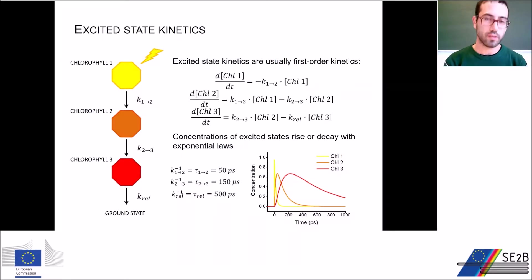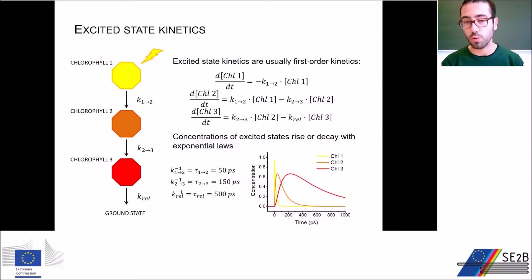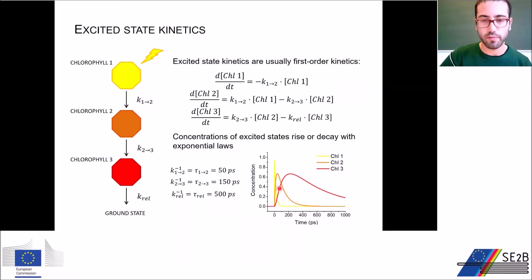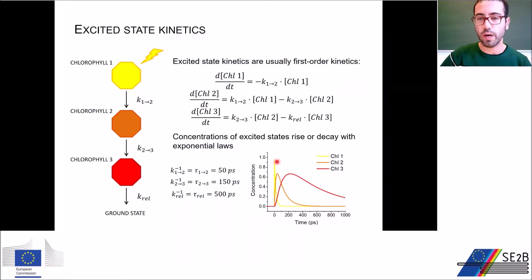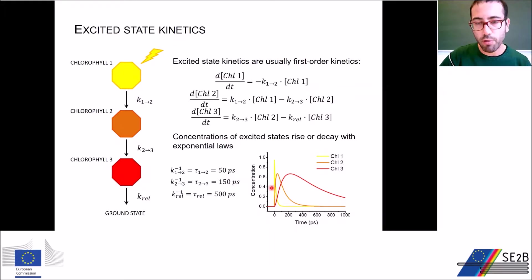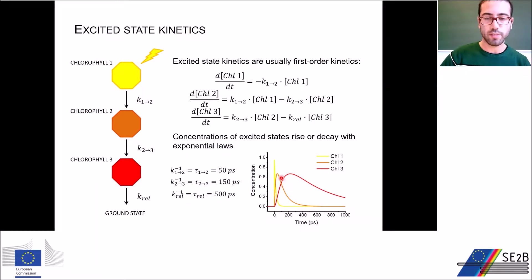This means that the concentration of the excited states of the different species will rise and decay exponentially. For example, if we pick values of 50, 150, and 500 picoseconds for the rates, we get concentration profiles for the excited states of the three chlorophyll species. The first (yellow) chlorophyll decays very fast, and by decaying it populates the second (orange) chlorophyll, which then decays and populates the third chlorophyll by energy transfer, which finally decays to the ground state.